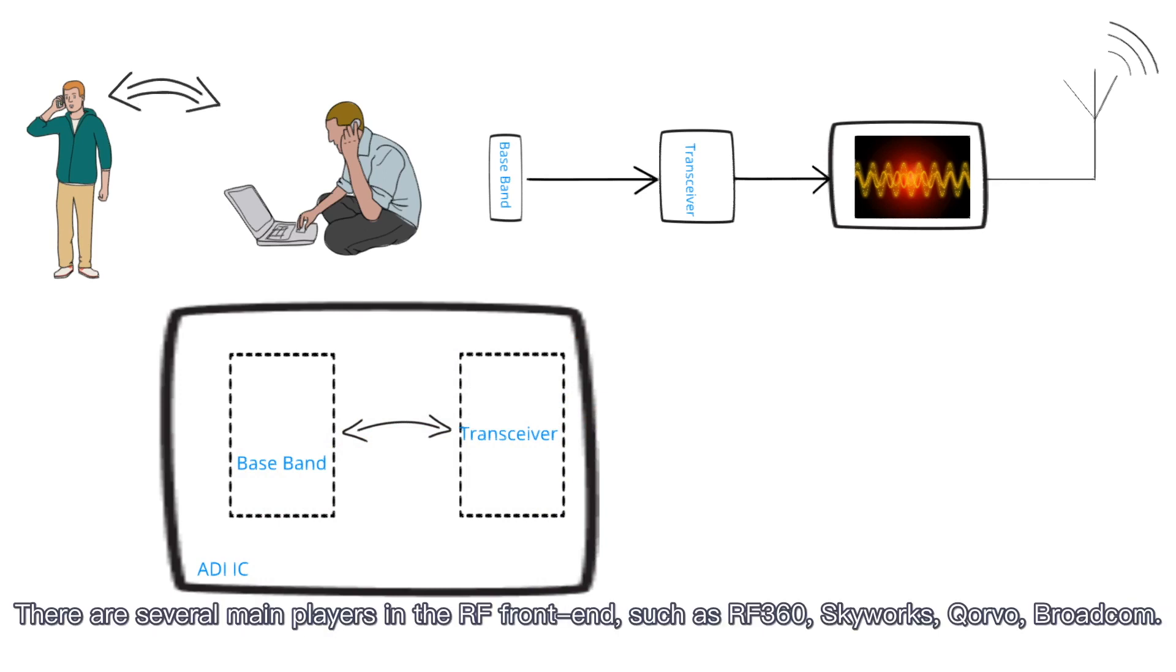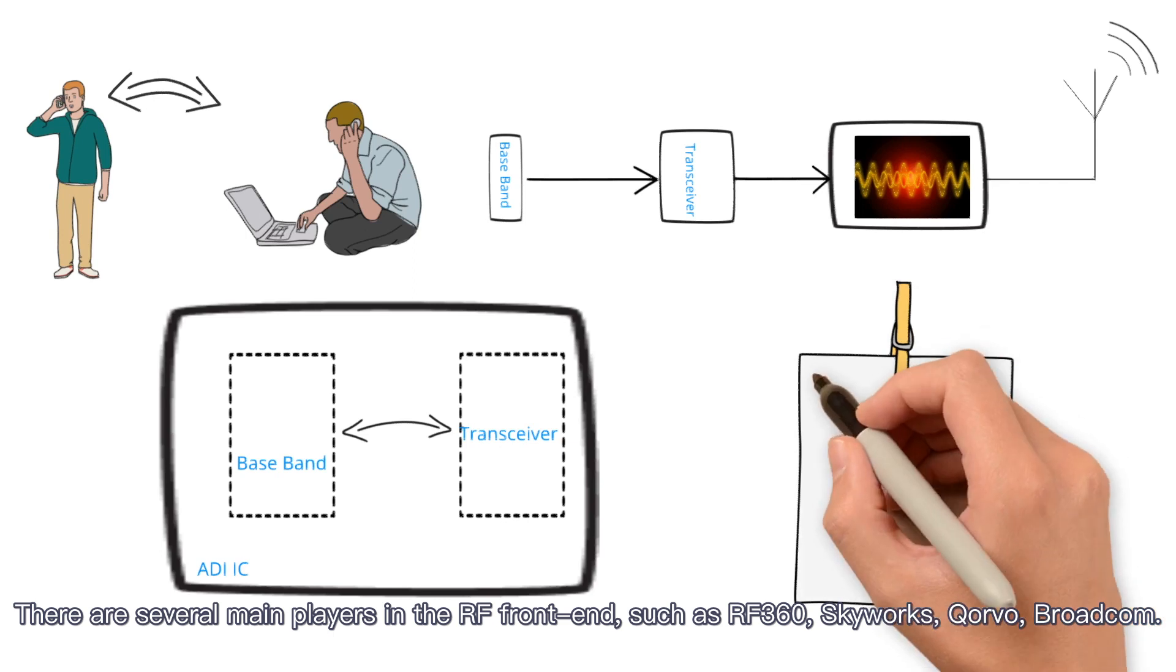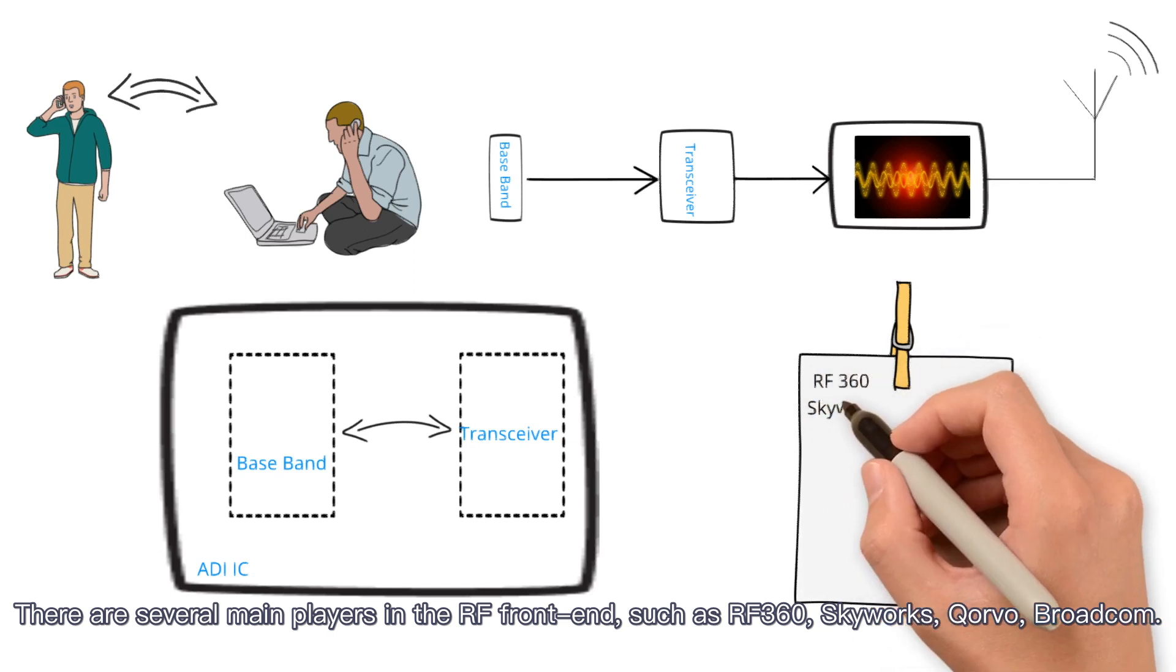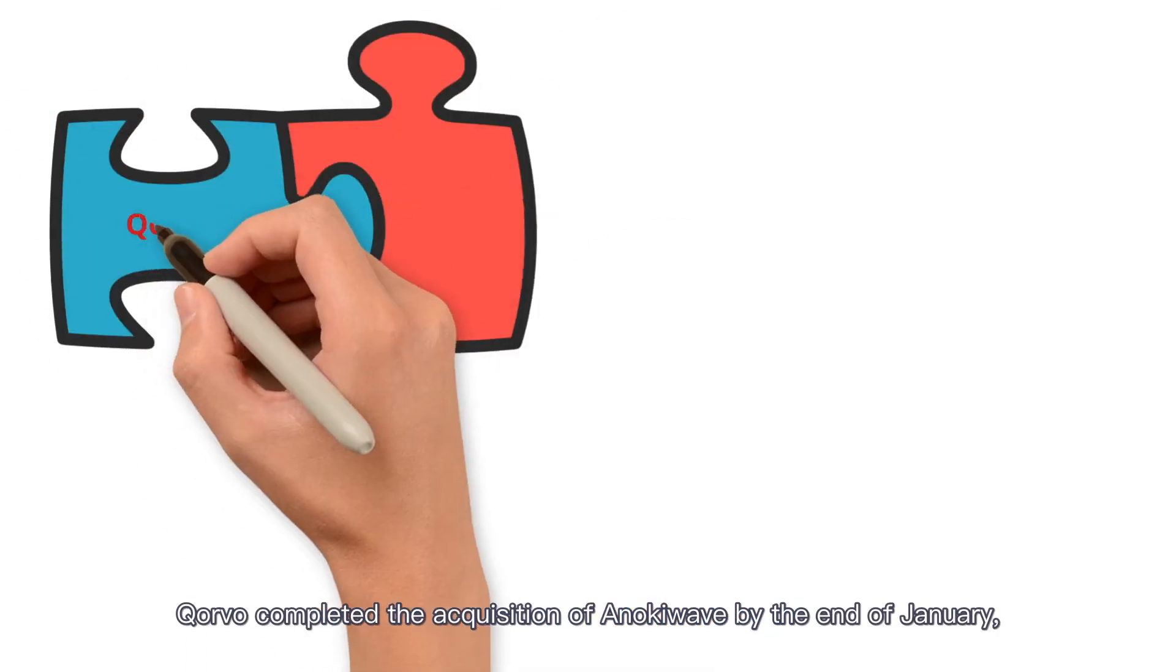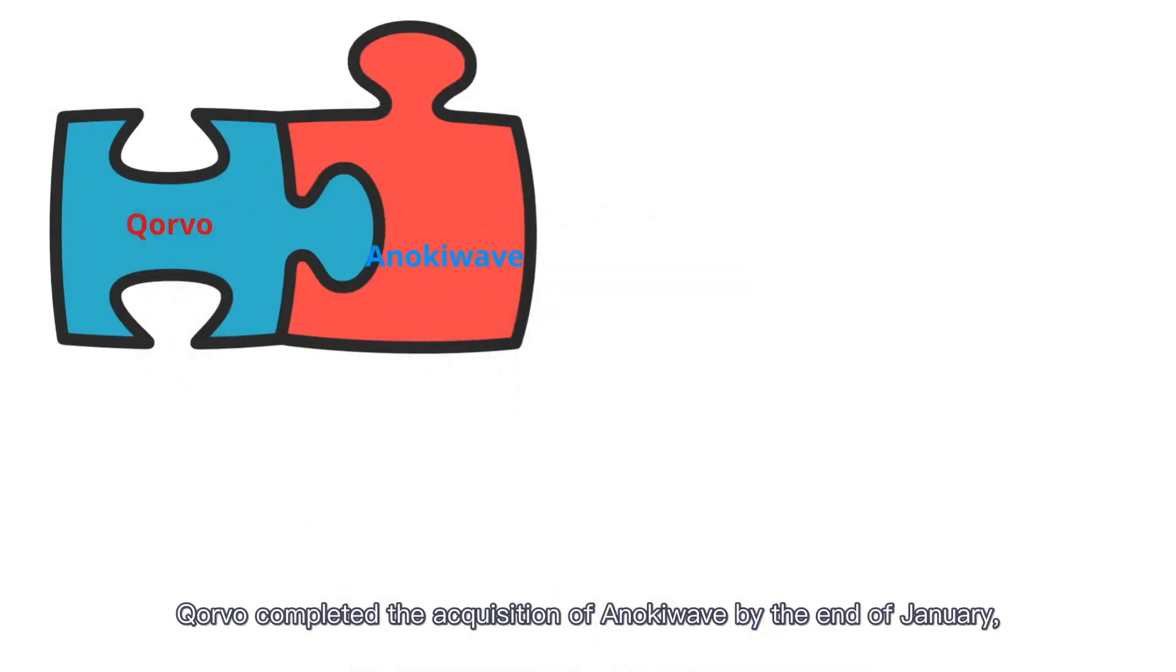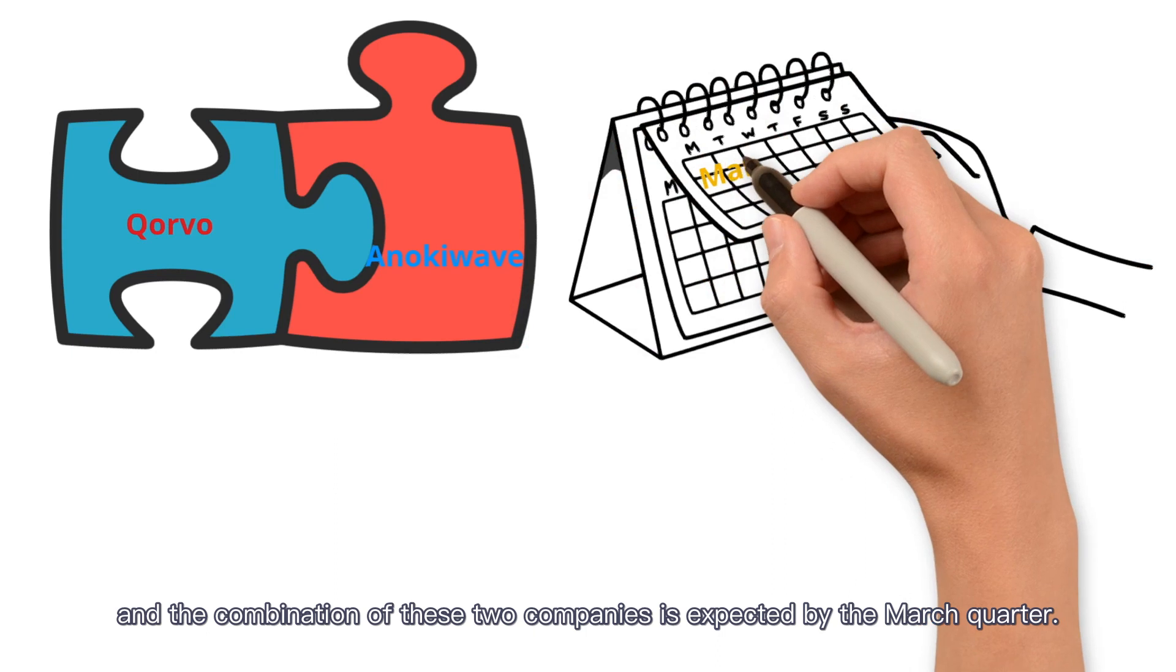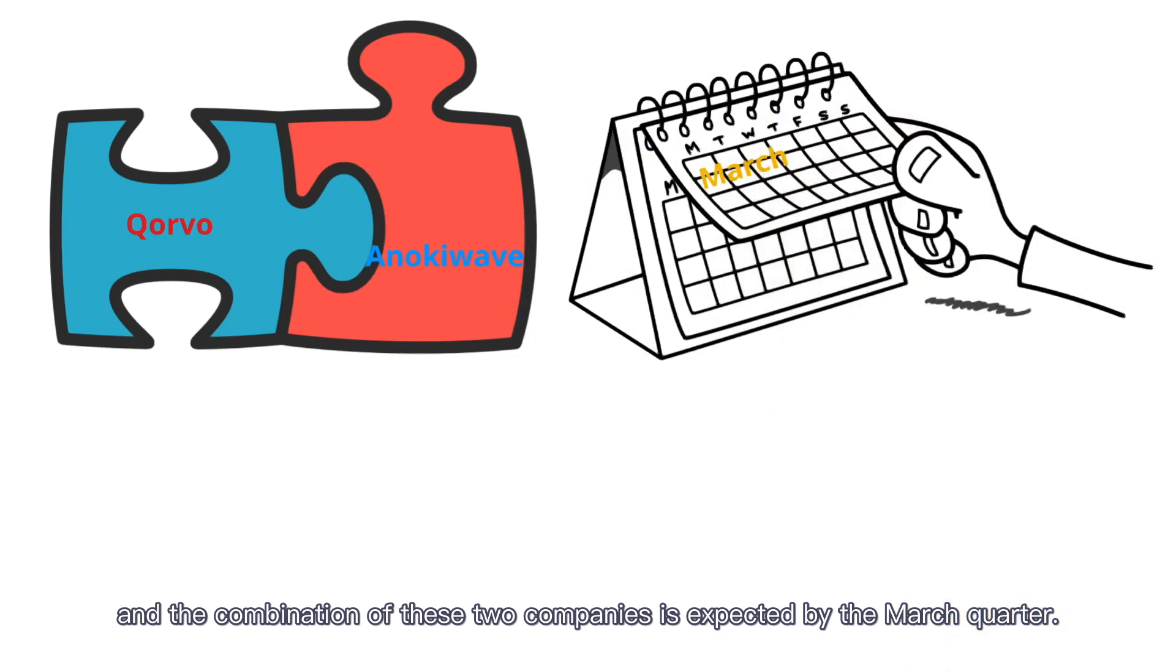There are several main players in the RF front end, such as RF360, Skyworks, Qorvo, and Broadcom. Qorvo completed the acquisition of Anokiwave by the end of January, and the combination of these two companies is expected by the March quarter.